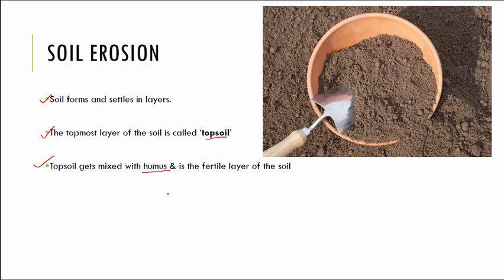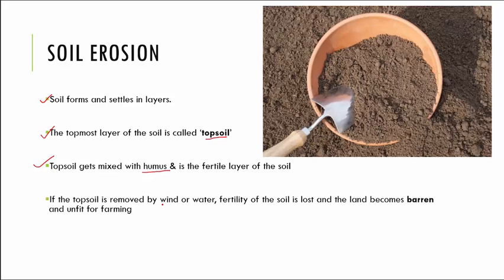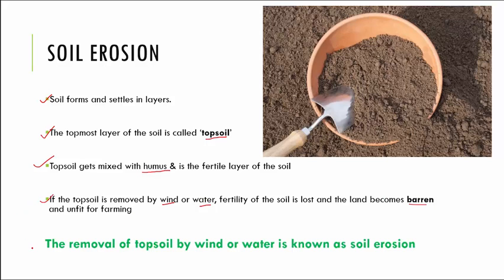All of this mixed together increases the fertility of the soil because a lot of minerals get into soil from dead and decaying plant and animal matter. If the topsoil is removed by either wind or water, the fertility of the soil is lost and the land becomes barren. Barren means a dry land where plants cannot grow, and once it becomes barren it is unfit for farming.